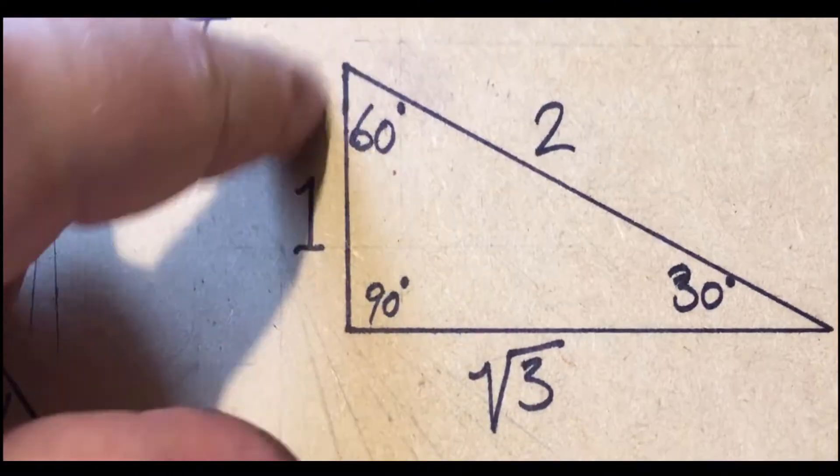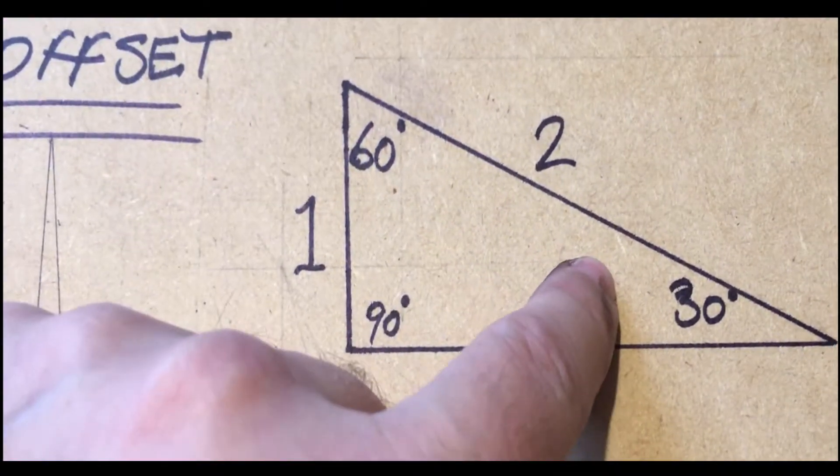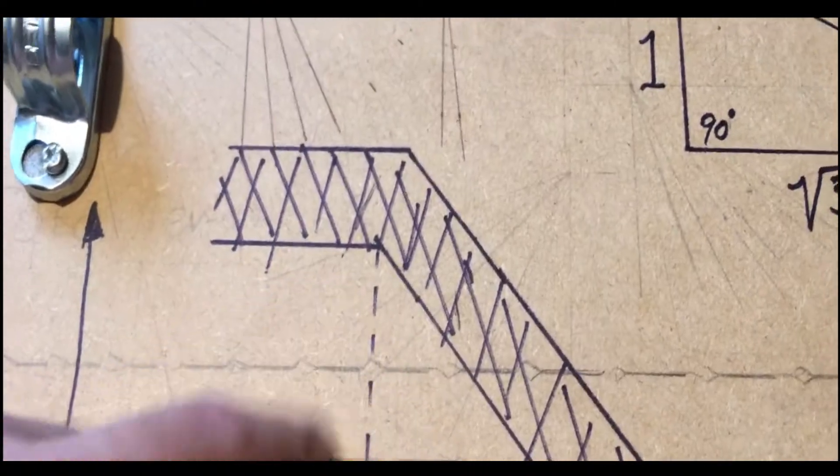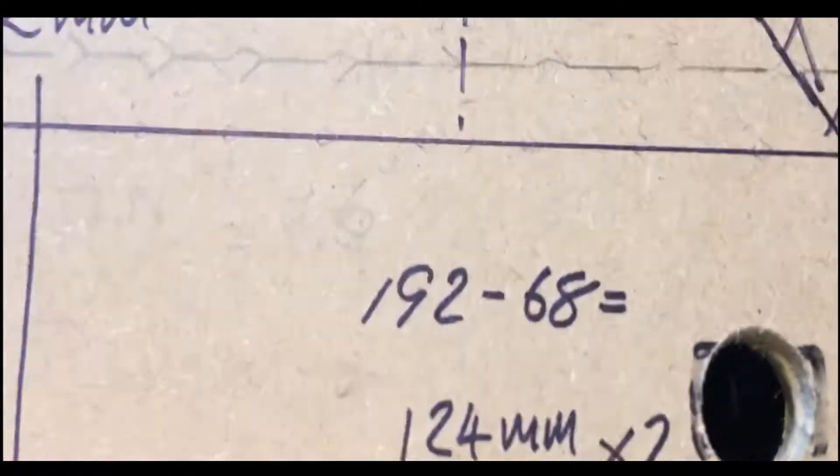You take this 124mm and multiply it by 2. Whatever distance you're trying to go over, you multiply it by 2. So 124 times 2 is 248.